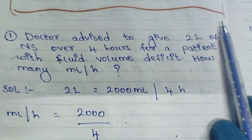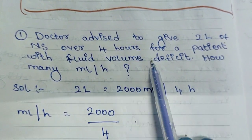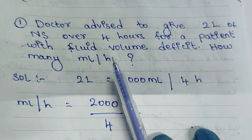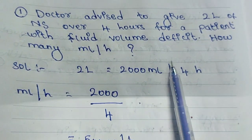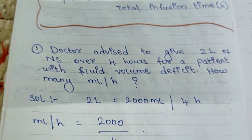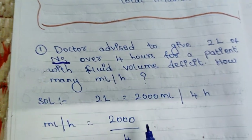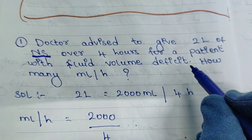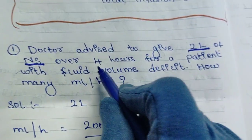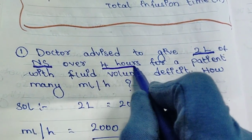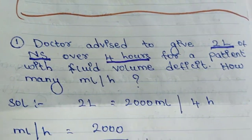Let's see an example. Doctor advised to give 2 liters of NS over 4 hours for a patient with fluid volume deficit. How many ml per hour will you give? First, the fluid is NS — normal saline. The total infusion volume is 2 liters, and the total time is 4 hours. These are the main points you need to extract from the question.